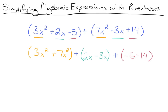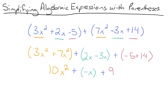Now we can simplify each set of parentheses. 3x squared plus 7x squared is 10x squared. 2x minus 3x is negative x, so we have plus negative x. Negative 5 plus 14 is 9. We can simplify further by changing adding a negative number to just subtracting, so our final answer is 10x squared minus x plus 9.